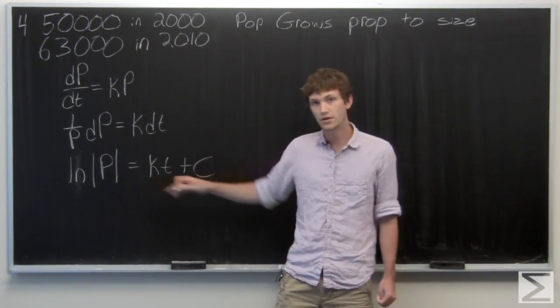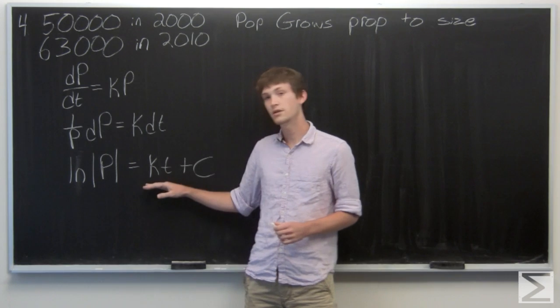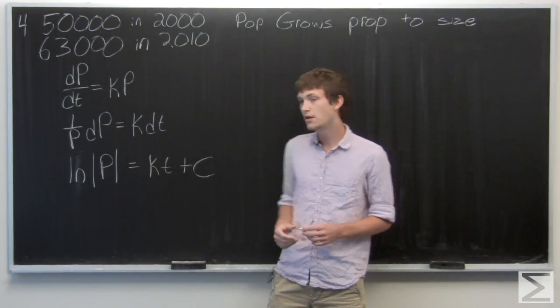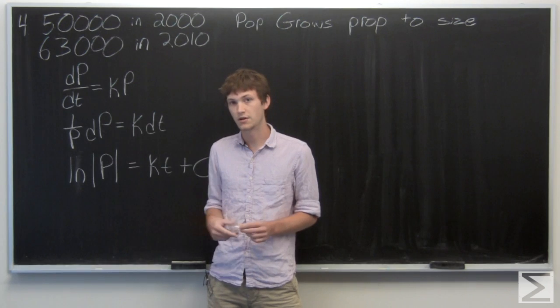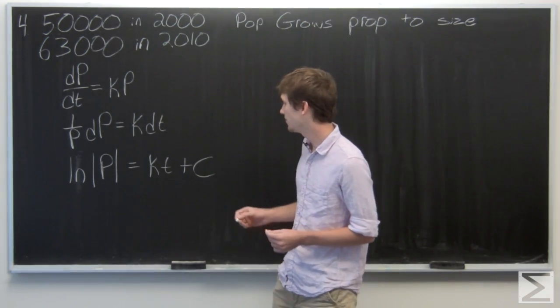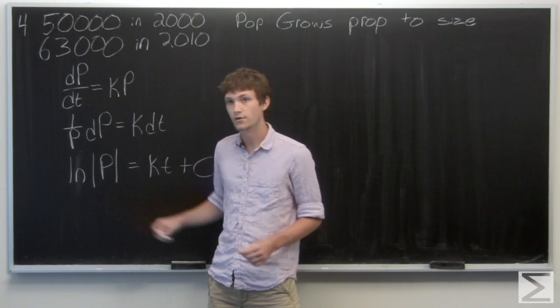We get the natural log of the absolute value of the population equals kt plus c. Now in this problem we know that the population is not going to be negative, so we can ignore the absolute value sign and we solve for P.